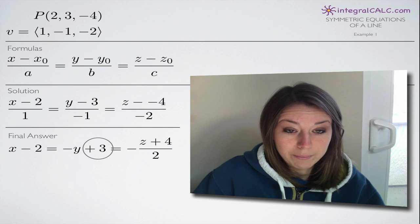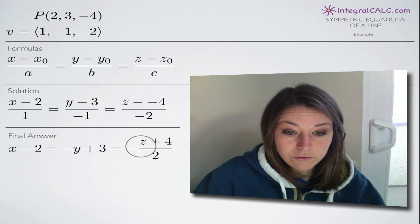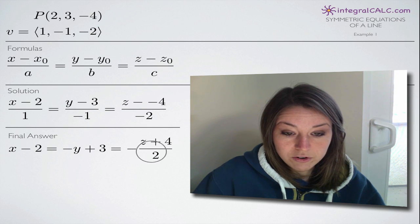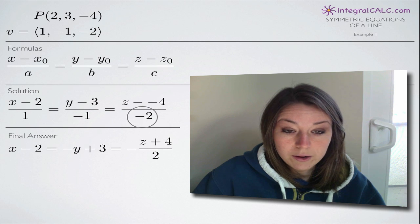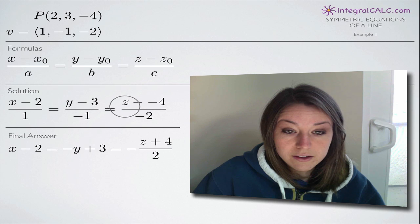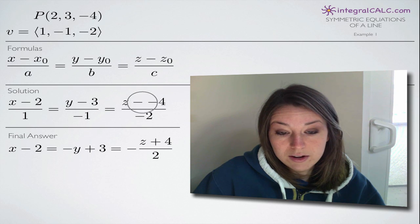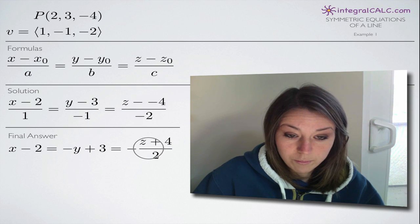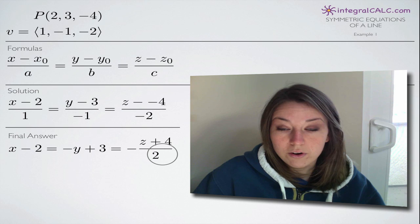And for our symmetric equation in z, we're going to bring the negative from the denominator out in front of the fraction and combine the double negative into a positive. So we're going to end up with negative z plus 4 divided by 2.